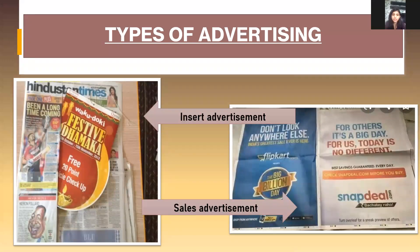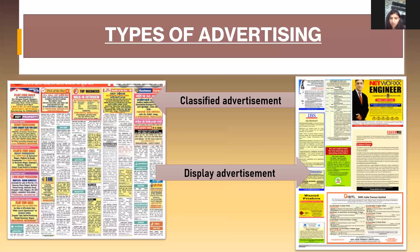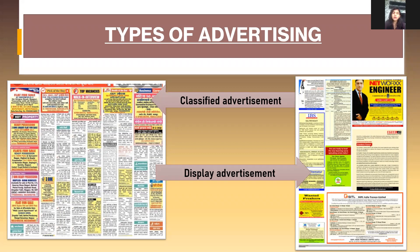The first type of advertising in newspaper is classified advertising. As shown in the picture, classified ads are usually a small section in the newspaper, mostly at the back. They are typically charged per word and are great places for businesses to advertise.